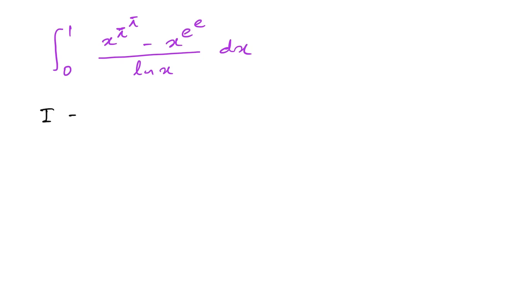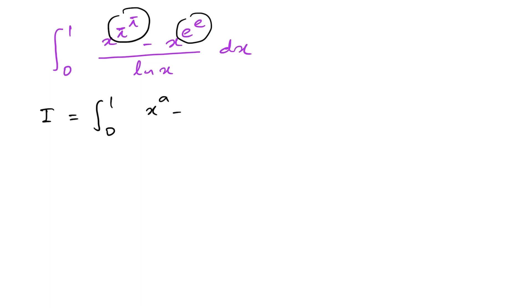So if we take I equal to the integral from 0 to 1 of (x^a minus x^b) over natural log of x, dx. Here we have π^π, which is a constant, so I'm going to call it a; and e^e is also a constant, so I'm going to call it b.